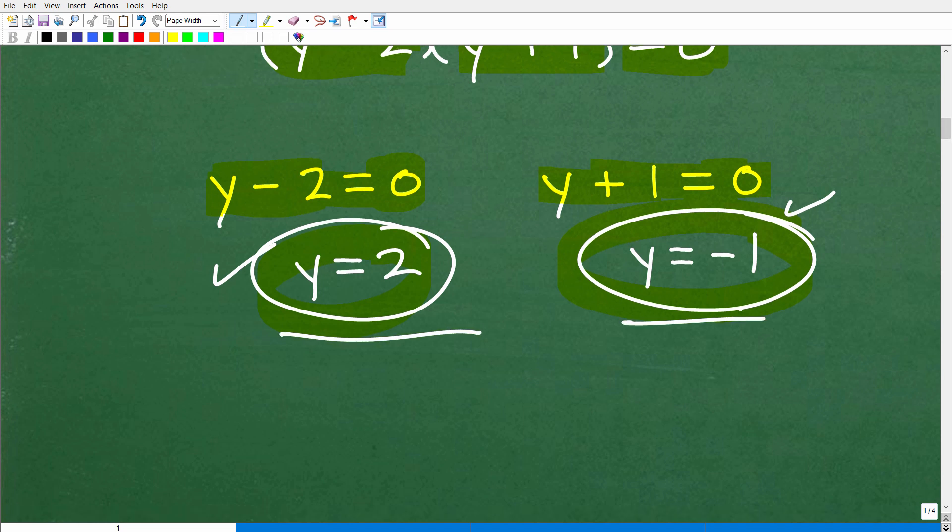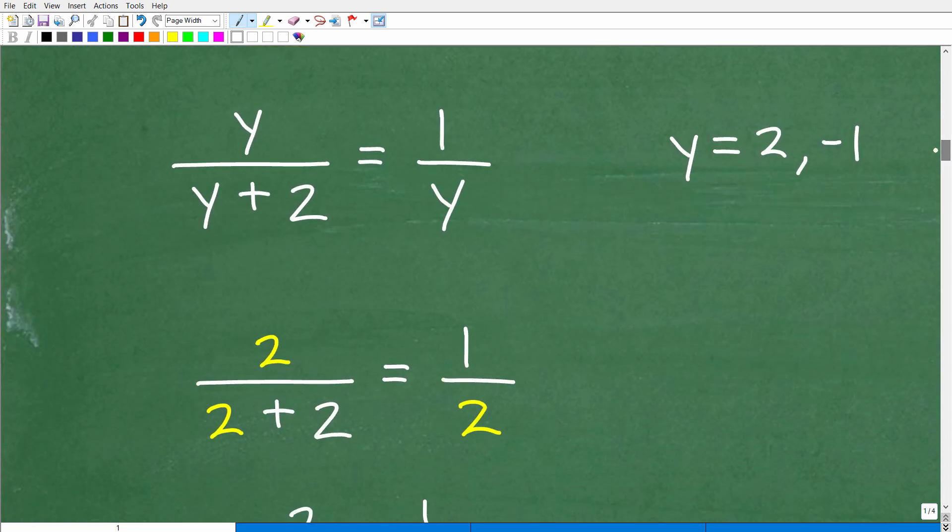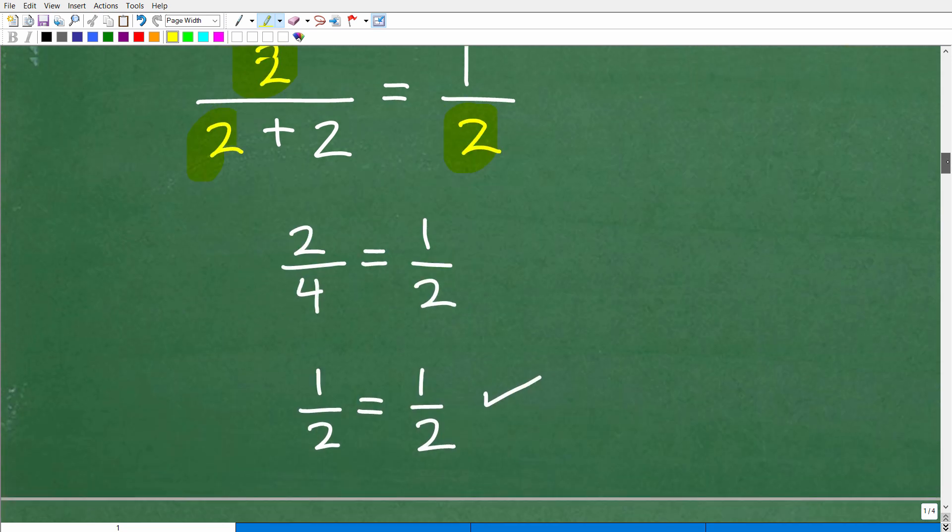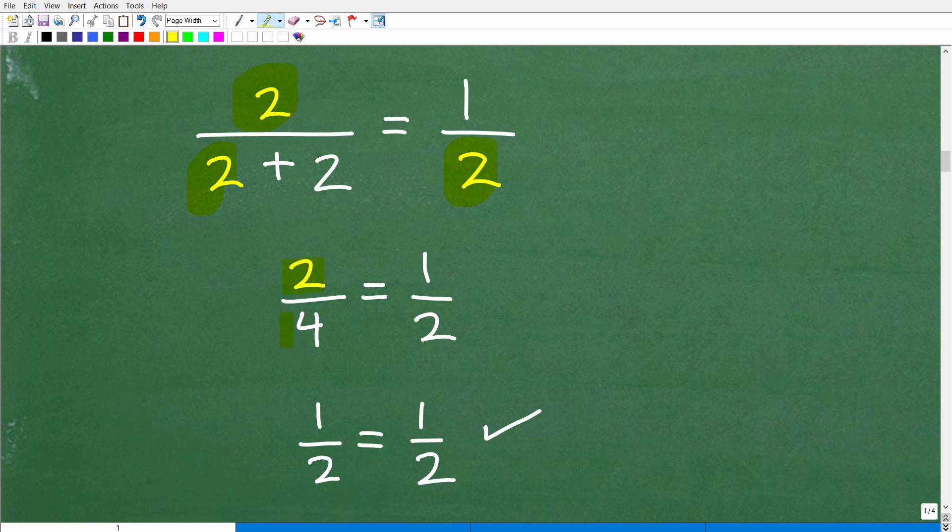Let's go ahead and check both of these in the original equation, y equals two and y equals negative one, and we'll see if they work. So y is equal to two, y equals negative one. Let's go ahead and check y equals two. So I want to replace this y, this y, this y with two, and we'll see what happens. Hopefully the left-hand side equals the right-hand side. So you can see here, I'm replacing these y's with two. Now let's go ahead and do the arithmetic. So two over two plus two is two over four. Is that equal to one half? Well, two fourths when I reduce that is one half. One half is equal to one half. So that works. The left-hand side is in fact equal to the right-hand side. So two is a good solution.